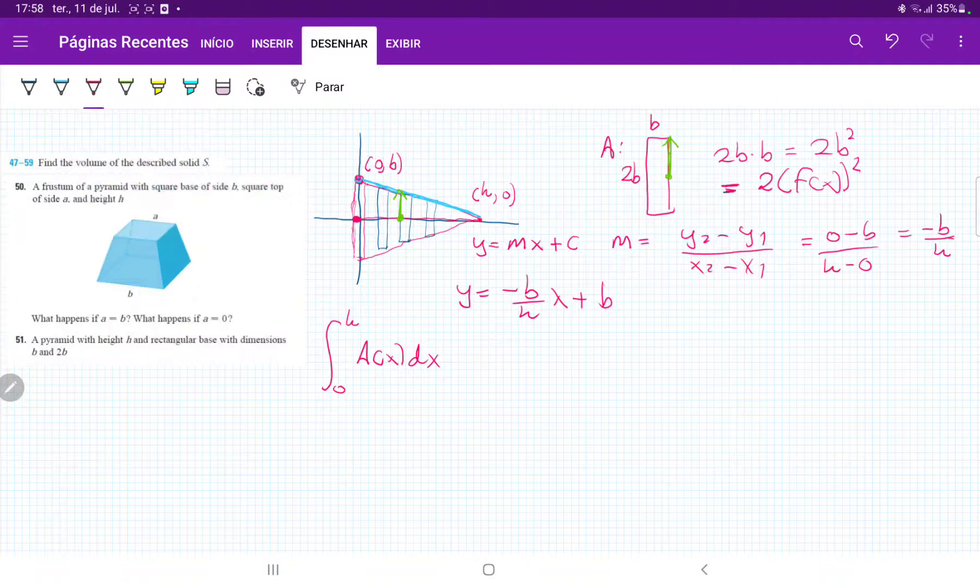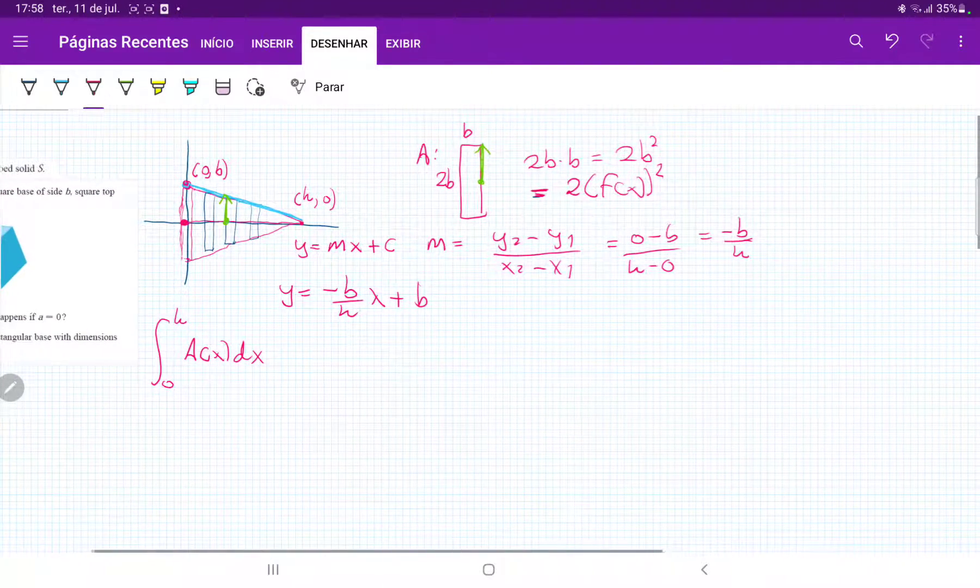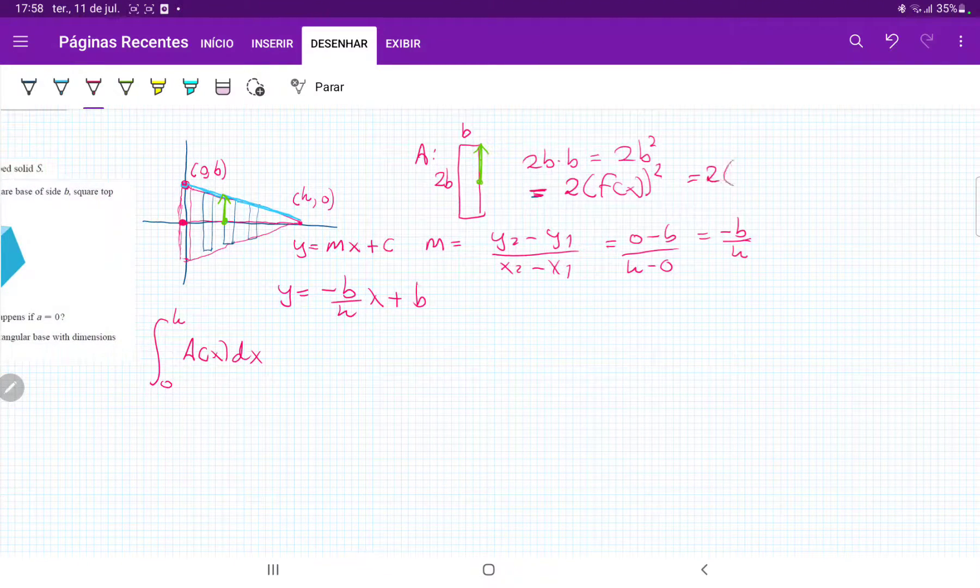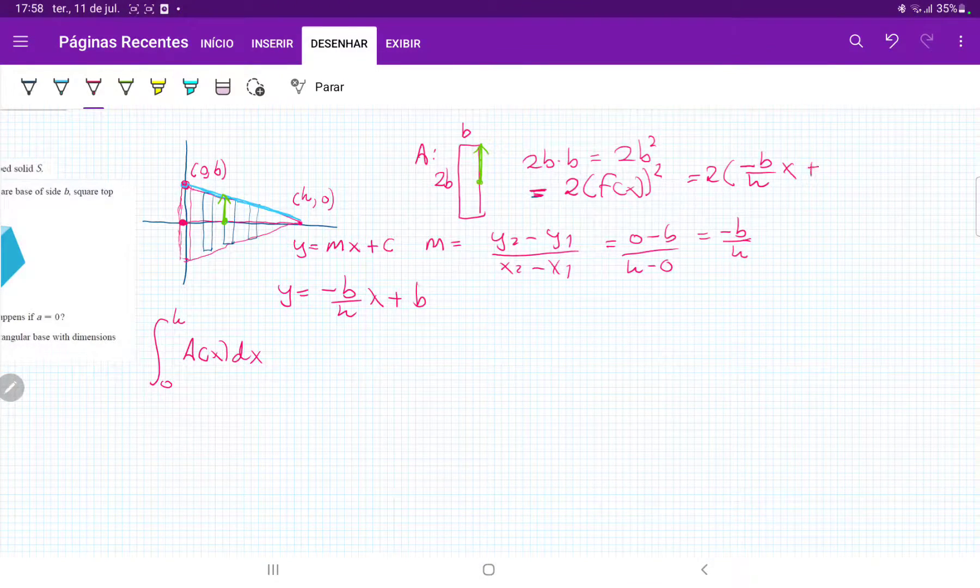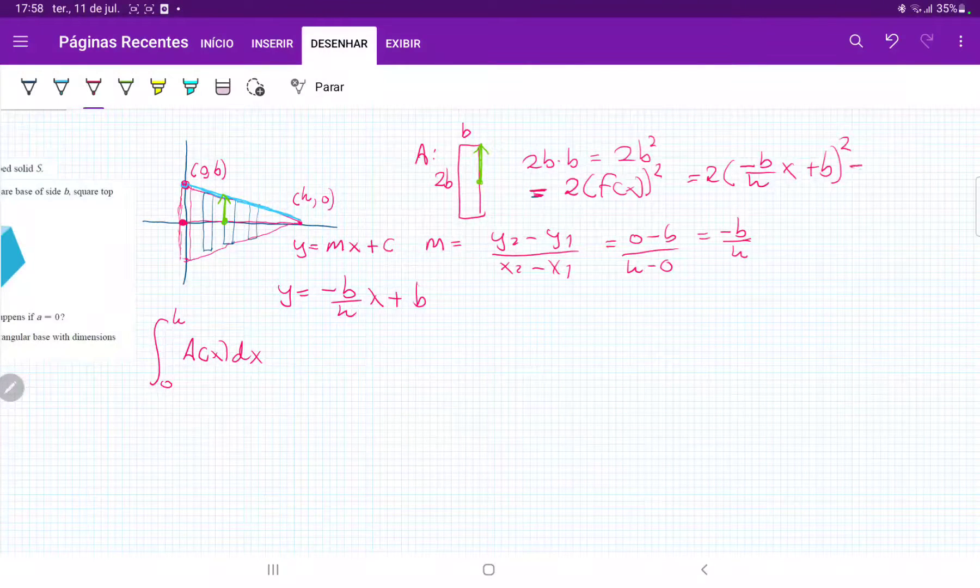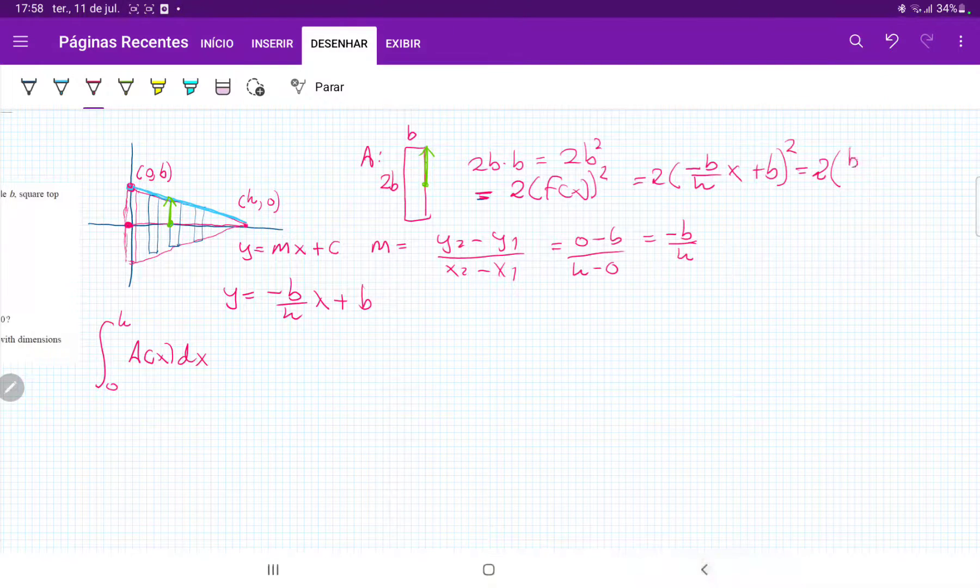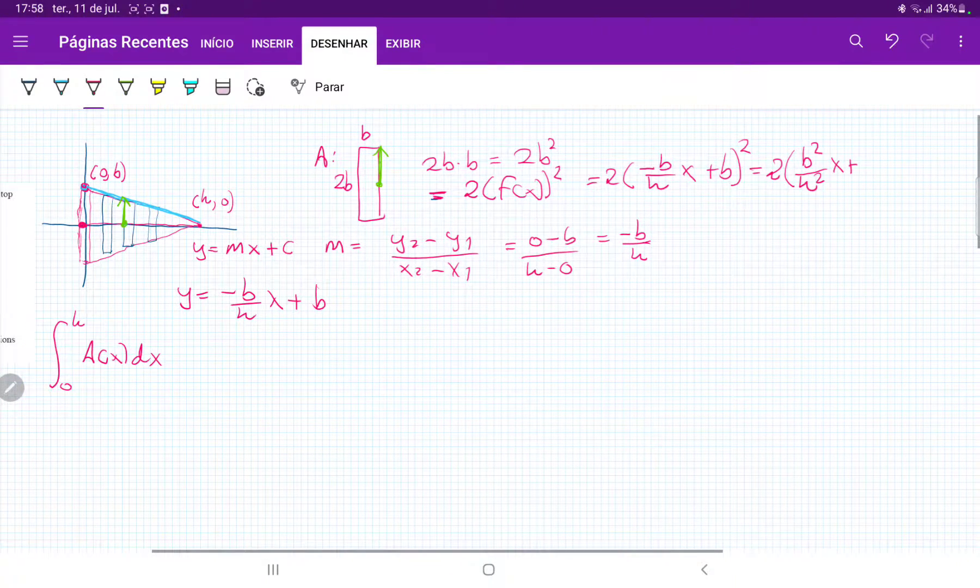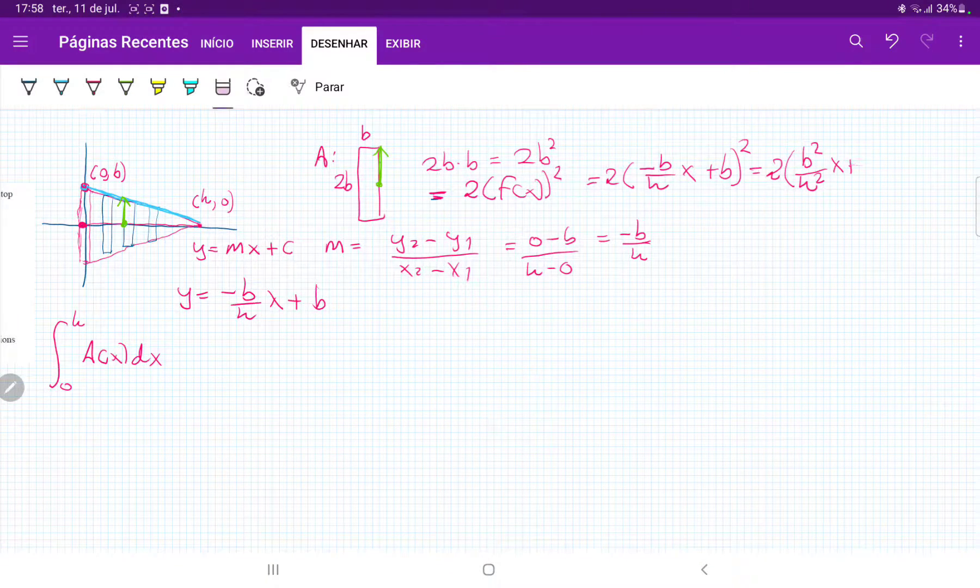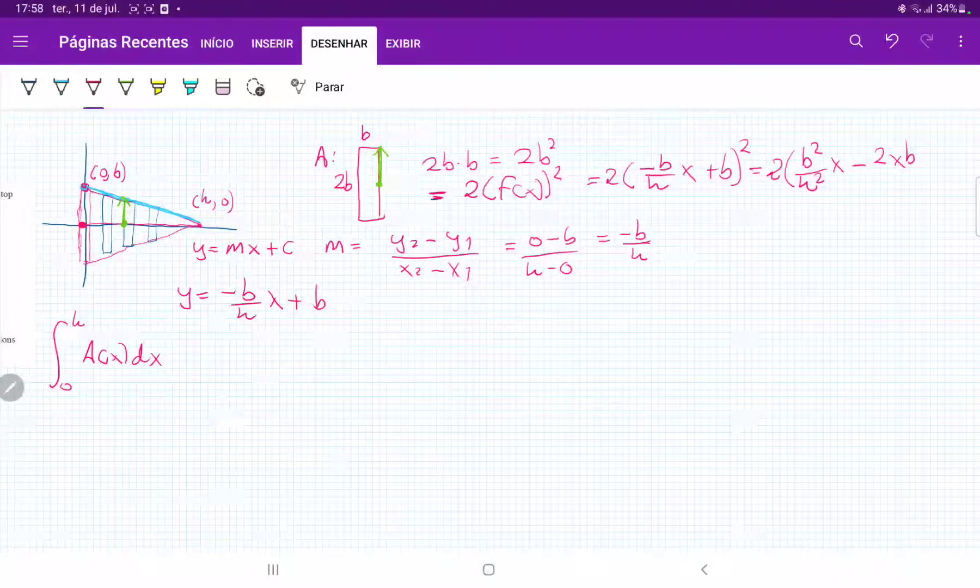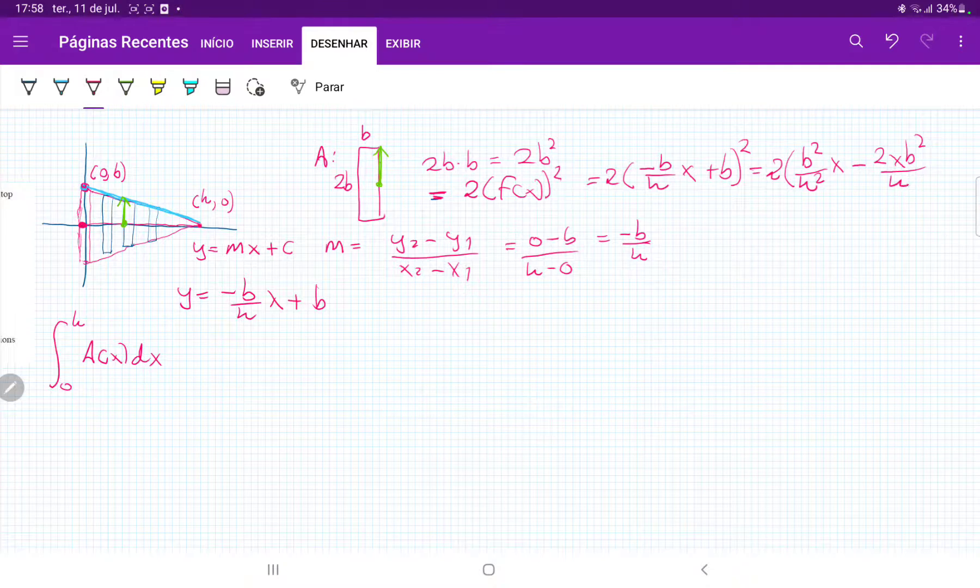So once we get this, let's just expand our area, which is equal to 2 times f(x) is this, so minus b over h times x plus b squared, which is equal to 2 times that is b squared over h squared x squared minus 2xb squared over h, and then plus b squared.